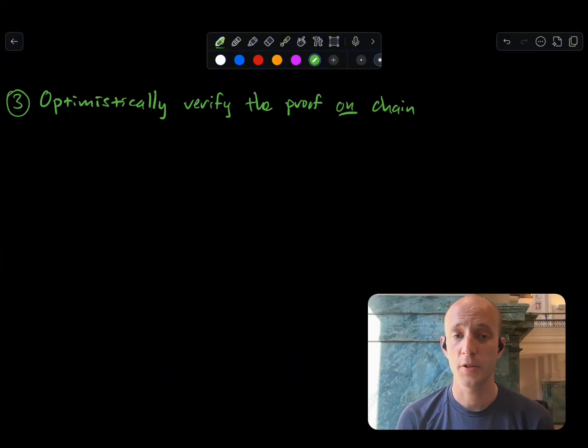So we said that for complex financial transactions, we can't verify a full proof of computation on-chain. It just doesn't scale. So what can we do? One option, which is used in BitVM1 and BitVM2, among other designs, is to verify a proof on-chain, but to only do it optimistically. Let's look at what that means.